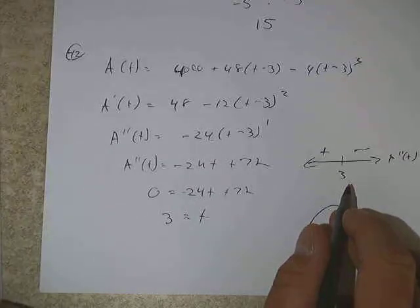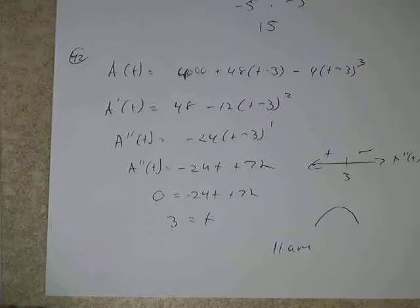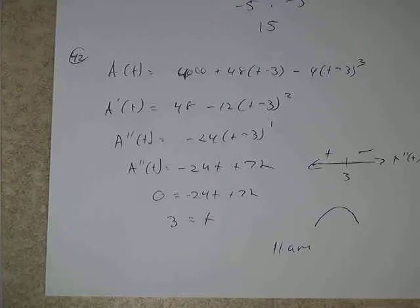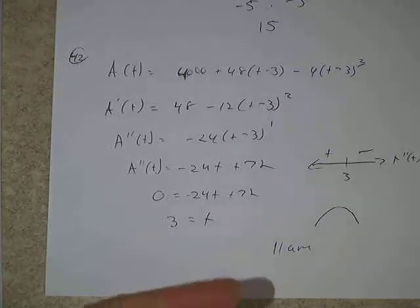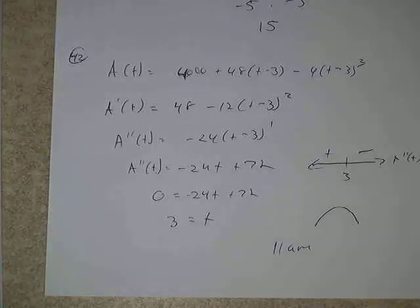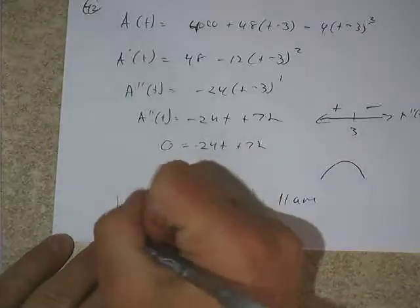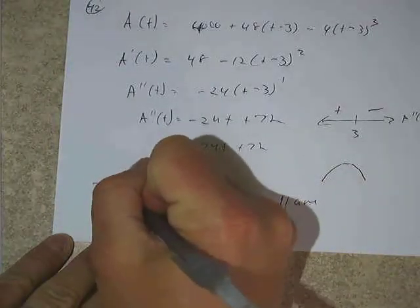So the maximum rate occurs at time t = 3. Since production started at 8 a.m., the answer is 11 a.m., letter C. A student asked how to know the first function is the rate function. The problem tells us it's an amount function. If it had been a rate function from the start, we'd only need one derivative. We need to read carefully what type of function we're starting with.